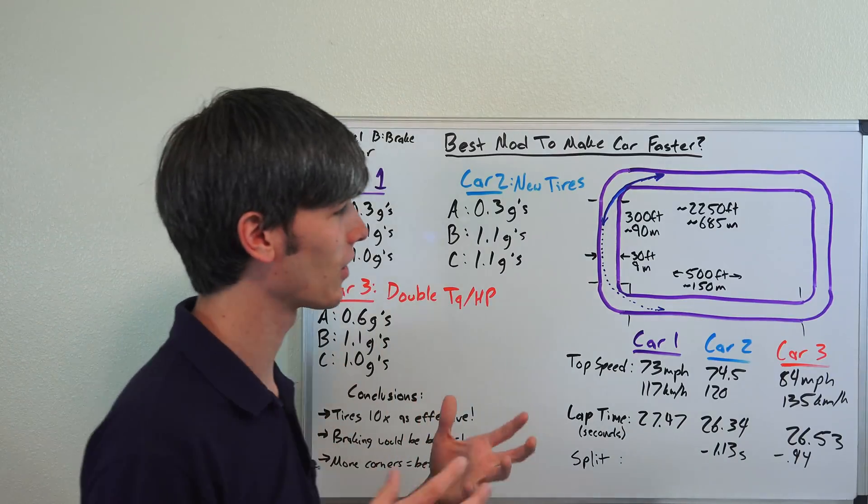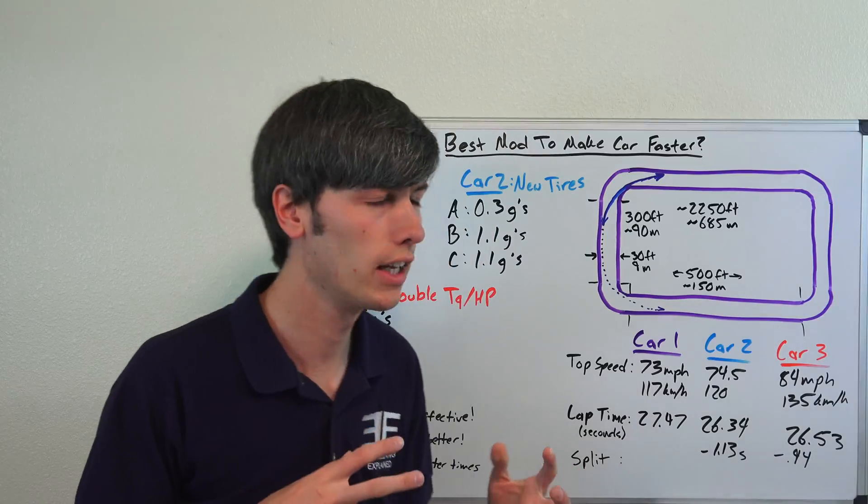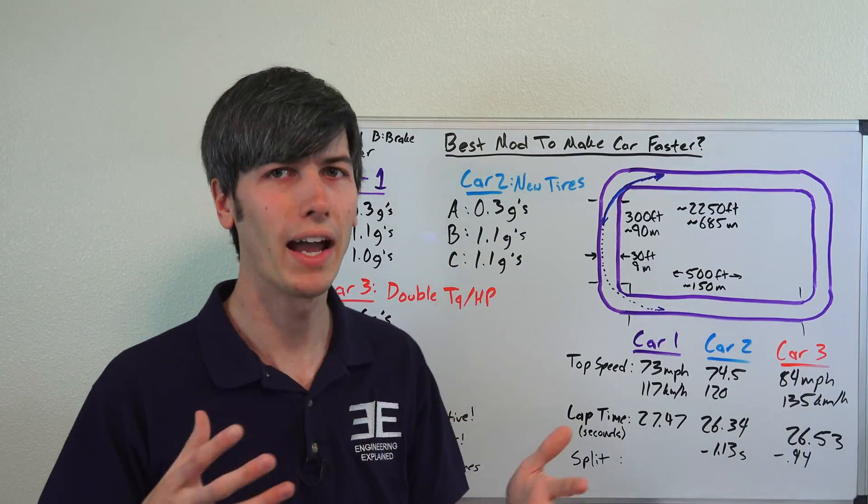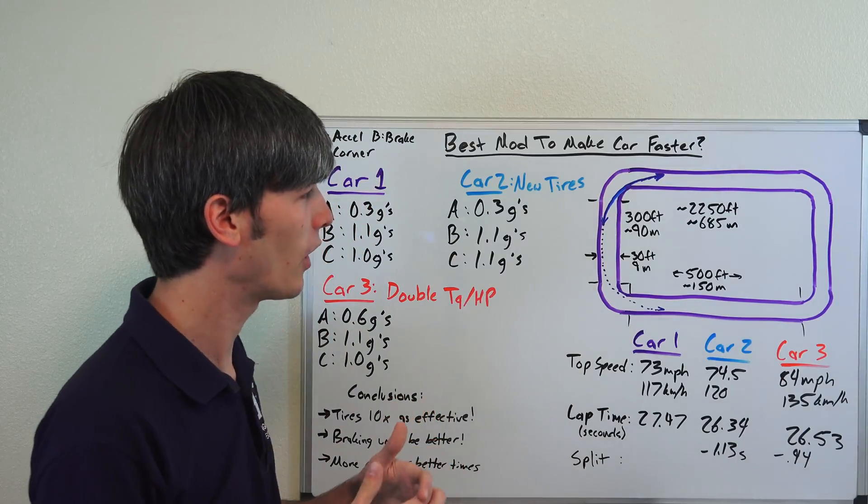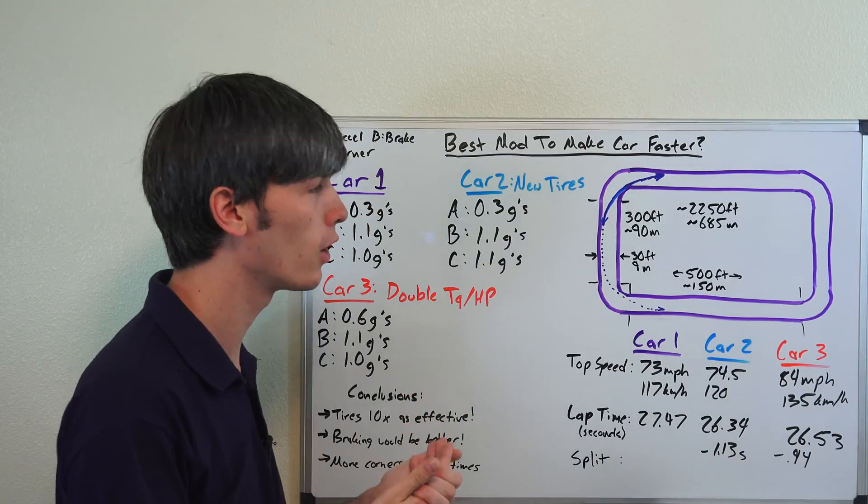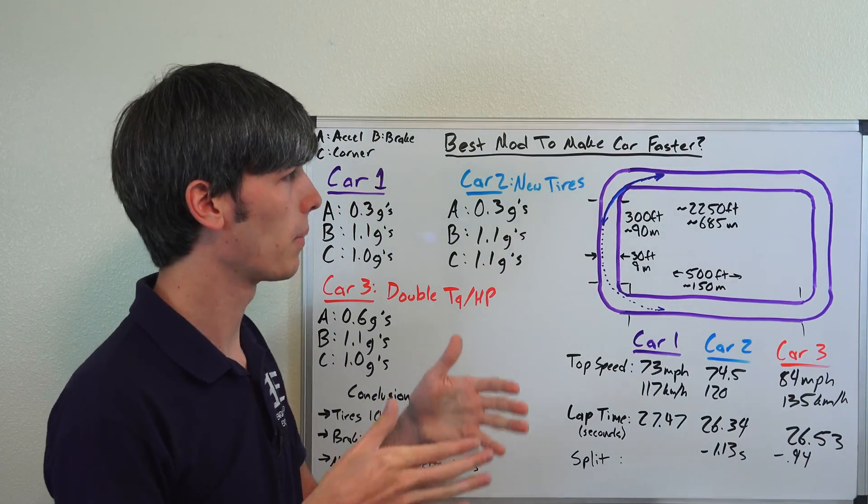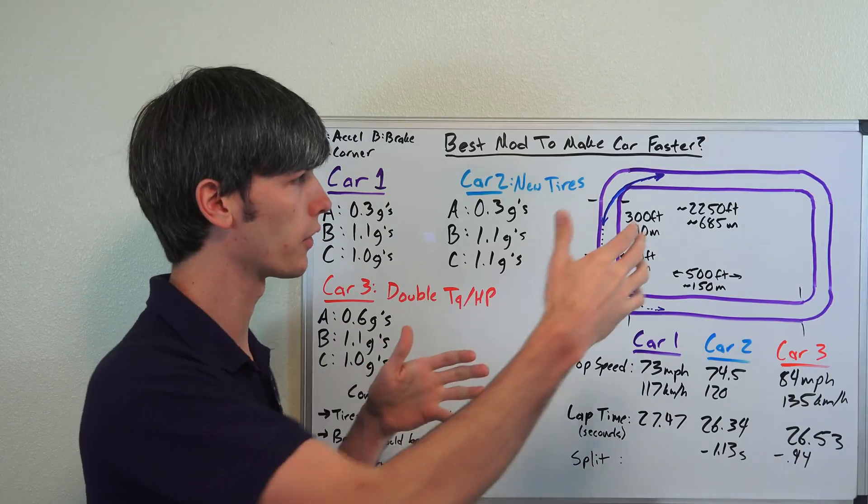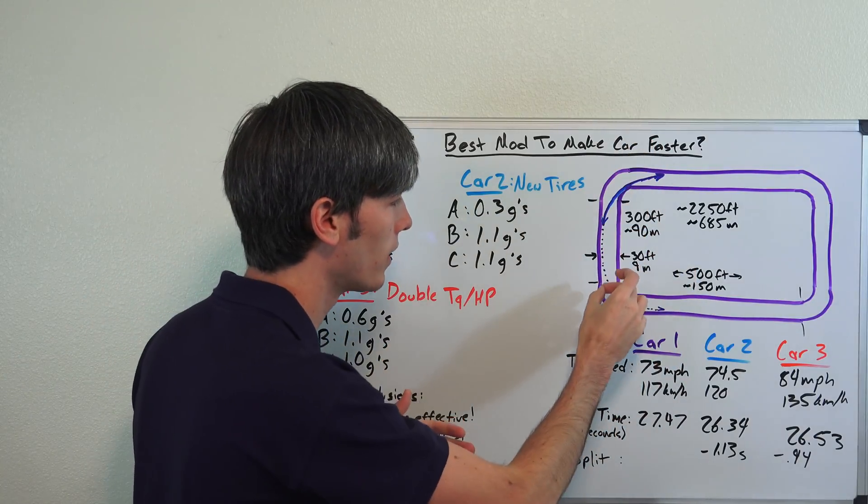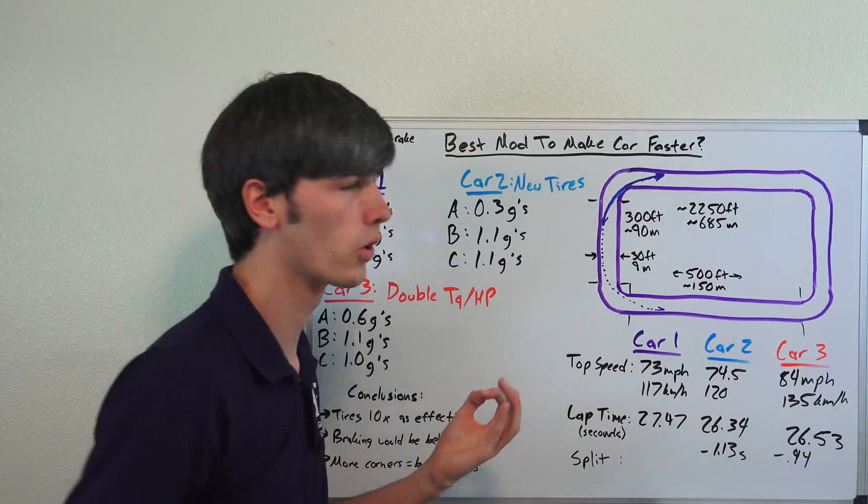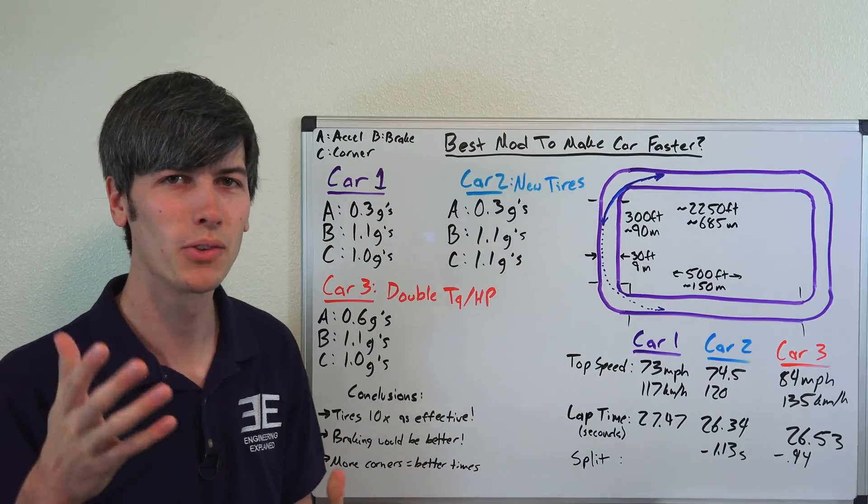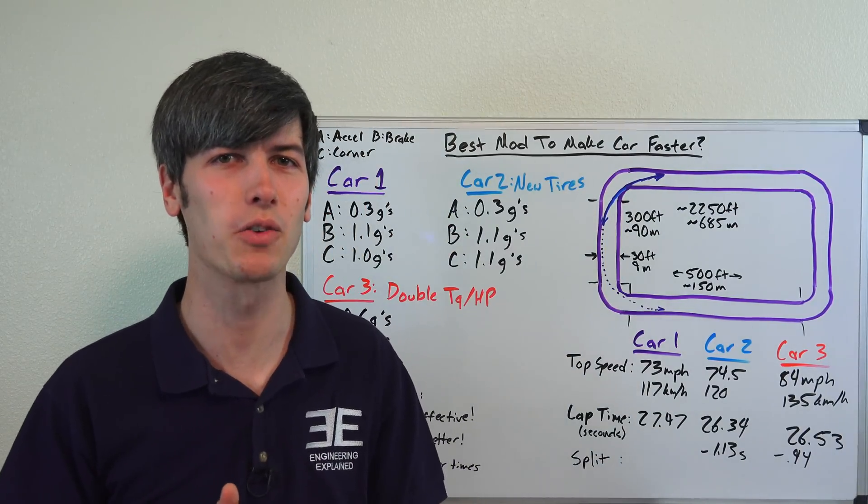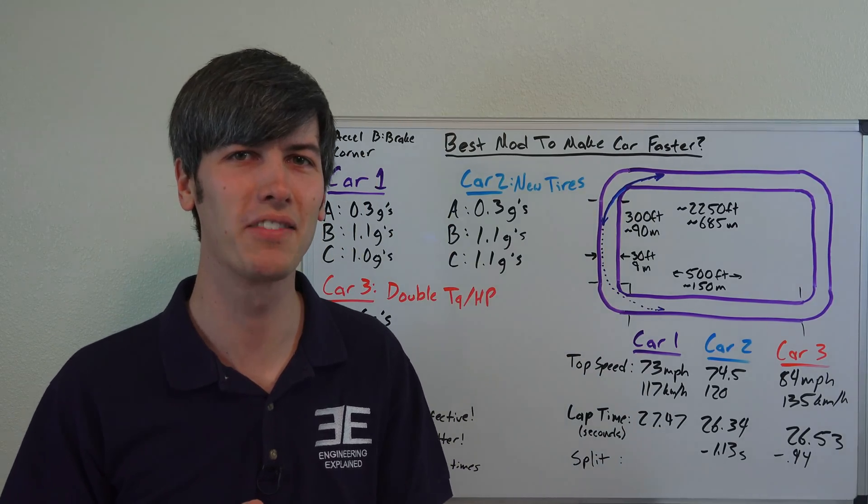Basically the lesson here to learn is it's not necessary to go super fast, you just don't want to go super slow. And the way you avoid going super slow is maintaining a high speed by keeping a high speed in your corners. So if you can maintain a high speed throughout the duration of the track rather than slowing down a lot and then accelerating a lot, you're going to be able to post a better lap time. So thank you all for watching, and if you have any questions or comments feel free to leave them below.